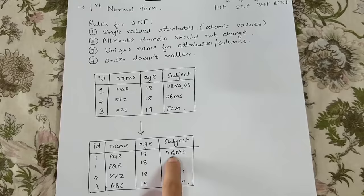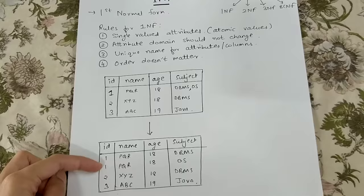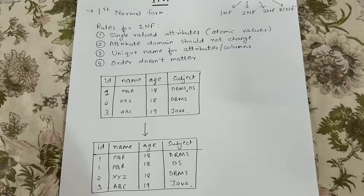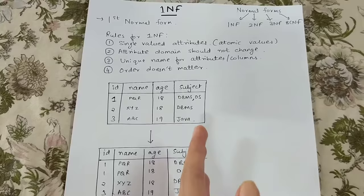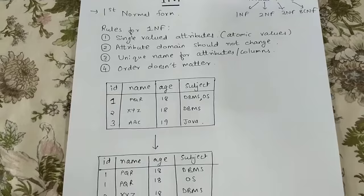DBMS and OS will be written separately. Repetition of data is happening here — ID 1 is being repeated two times — but this is the rule for 1NF. In the next form, 2NF, this repetition will be removed, and in 3NF and BCNF something better will happen. So this is essentially the first step to a normalized form.